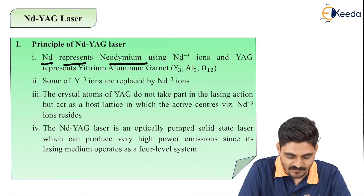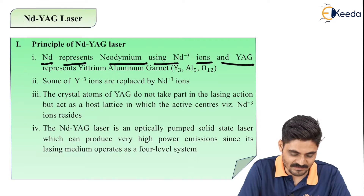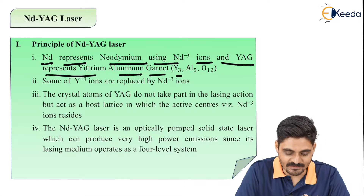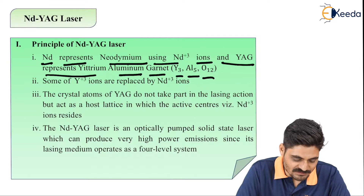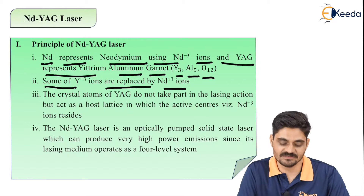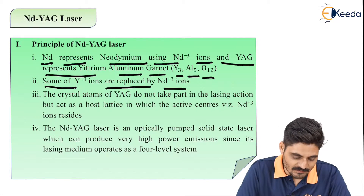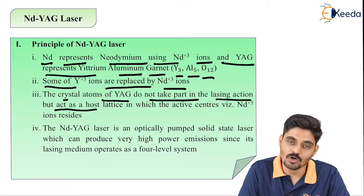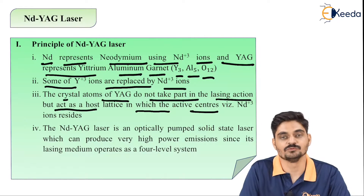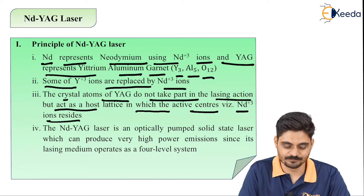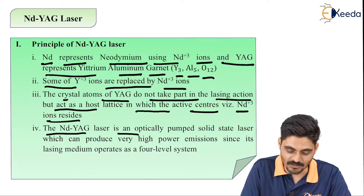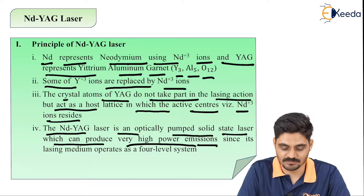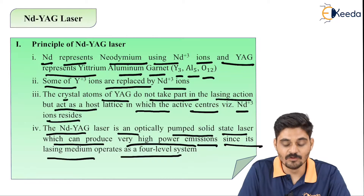Nd:YAG represents Neodymium using Nd³⁺ ions, and YAG represents Yttrium Aluminium Garnet — Y₃Al₅O₁₂. Some of the Y³⁺ ions are replaced by Nd³⁺ ions. The crystal atoms of YAG do not take part in lasing action but act as a host lattice, in which the active centers — the active medium — are Nd³⁺ ions. The Nd:YAG laser is an optically pumped solid state laser which can produce very high power emissions, since its lasing medium operates as a 4-level system.